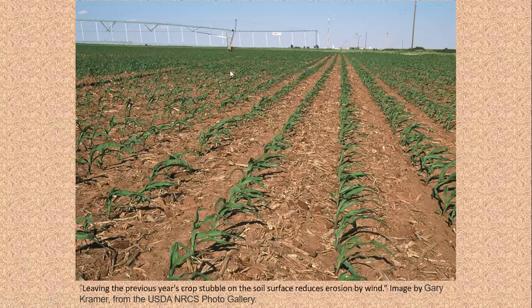This is another example of that where you can see the corn — the remainder of the corn crop from the year before — and then they planted new rows of corn next to the existing rows from the year before. You can see cobs of corn, stubble, and some roots still in the ground. This helps to reduce erosion by wind but also water.